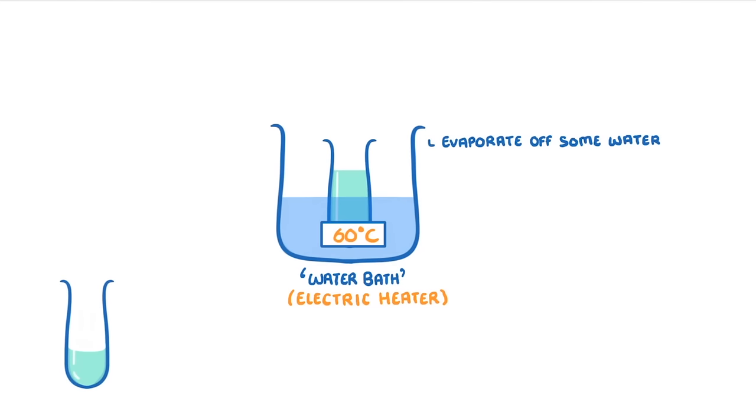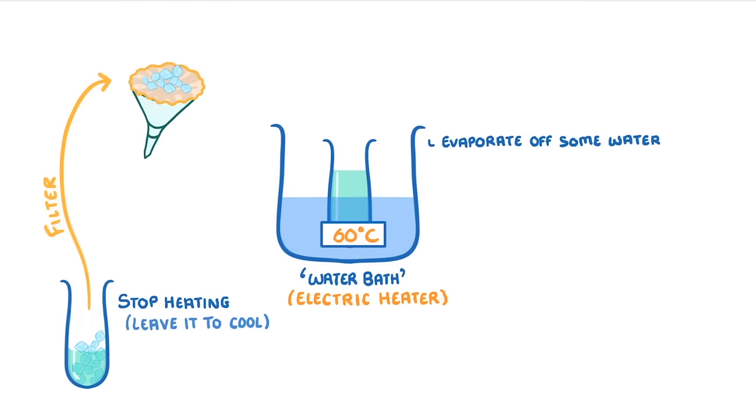Once we've evaporated a bit of the water off, and we start to see crystals forming, we can stop heating it and leave it to cool, which will cause even more crystals to form. We then filter these crystals out using filter paper and funnel again, and then dry our crystals, either by dabbing them with filter paper or leaving them somewhere warm.